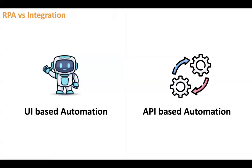Integration, on the other hand, is for API-based automation. You use integration when you have APIs available for the source and target applications. You generally use RPA when APIs are not available for an application, or APIs are not available for some time but you still need automation. So: RPA handles UI-based automation; integration handles API-based automation. That is the major difference. But the purpose is the same — automation.